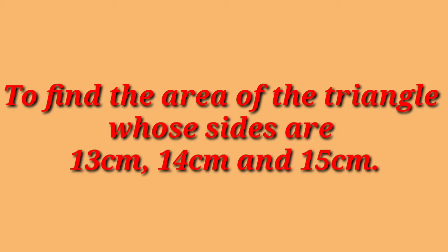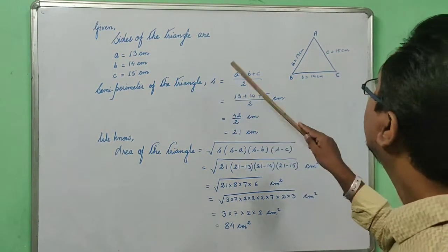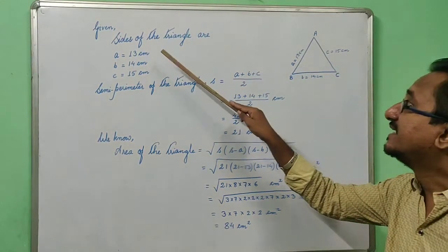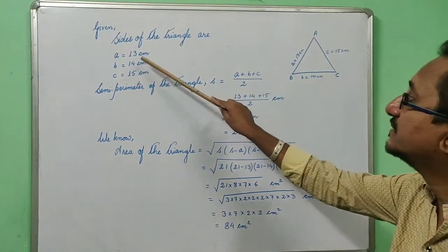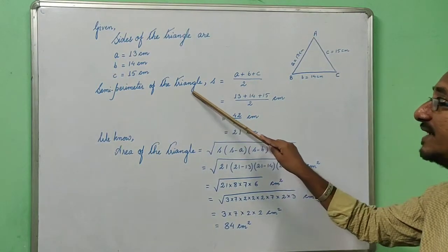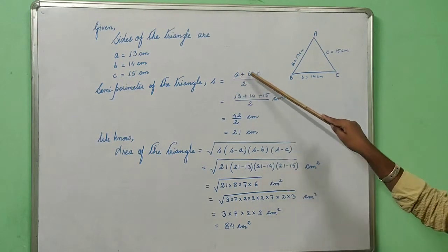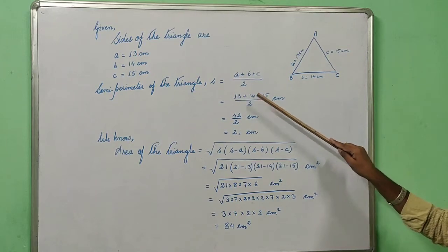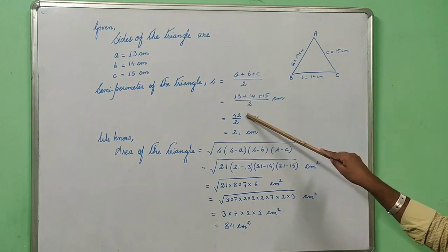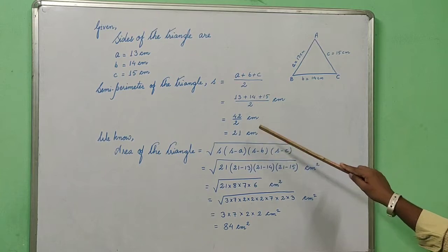Now let's find the area of a triangle whose sides are 13 cm, 14 cm, and 15 cm. We have taken the sides as a, b, and c, so a = 13, b = 14, and c = 15 cm. First we find the semi-perimeter: S = (13 + 14 + 15) / 2 = 42 / 2 = 21 cm.